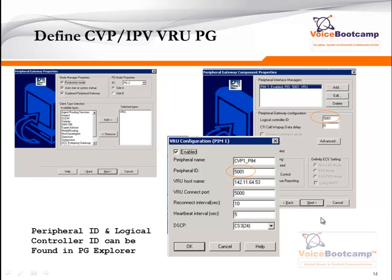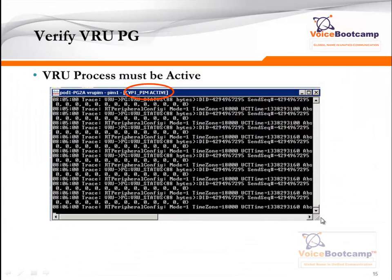The next step is to define a PG for CVP or IPI-VR. Similar settings, but instead of selecting CUCM, you're going to select VRU. You're going to enable PG controller ID and PG peripheral IDs. Define the hostname of the CVP server, and the VRU connection port is going to be 5000. It is very important that the logical ID and the peripheral ID match based on your PG Explorer. If the CVP or IPI-VR is configured properly, the VRU PIM will be in active mode. Note that some process display has been disabled in the registry by default, so if you want to see all these messages, you need to enable them in the registry settings.